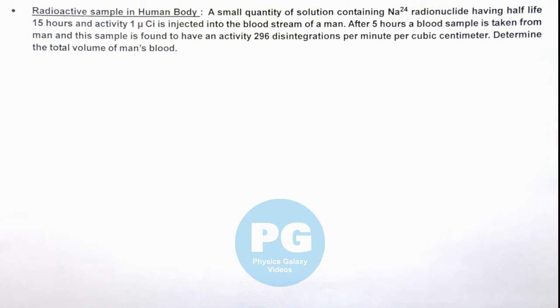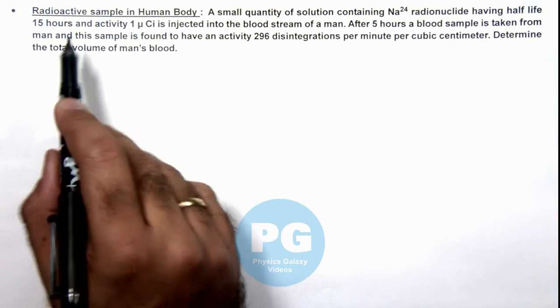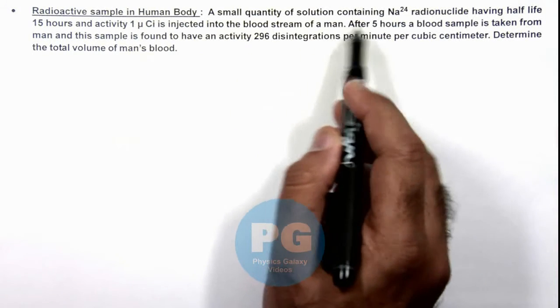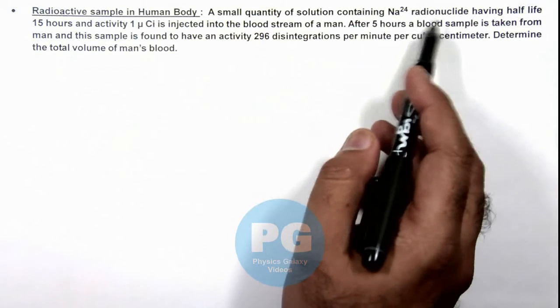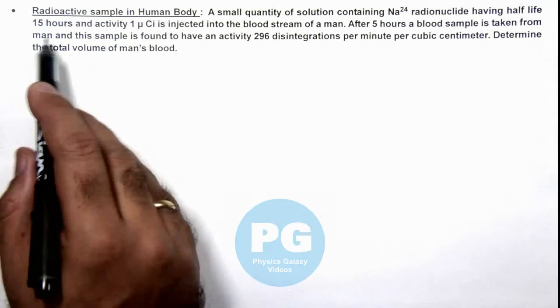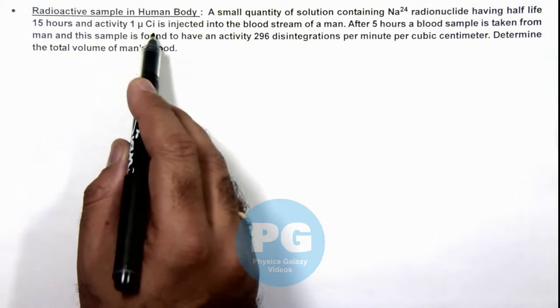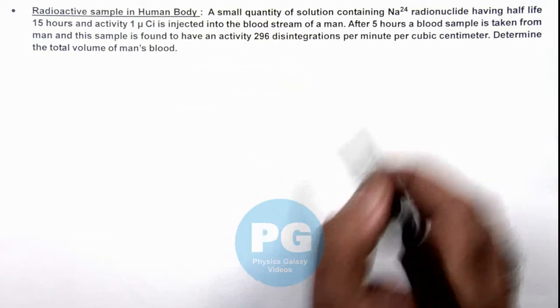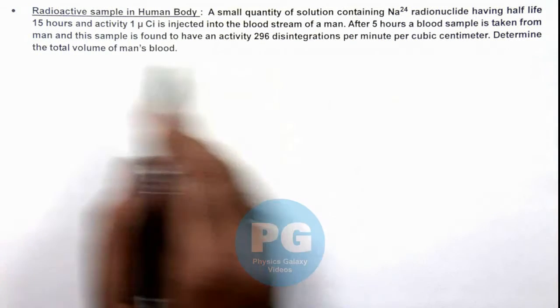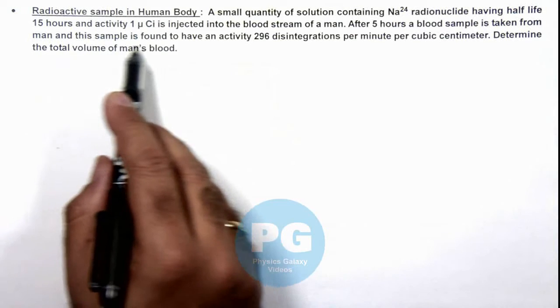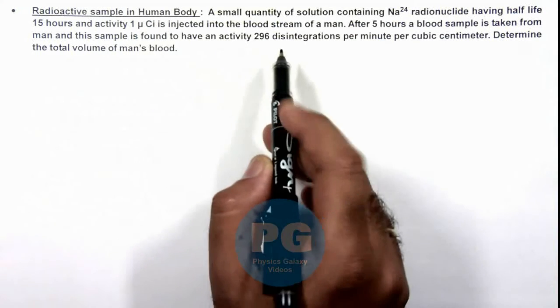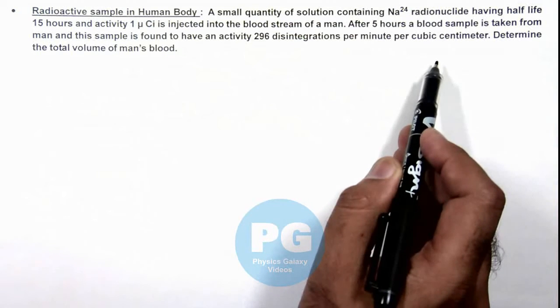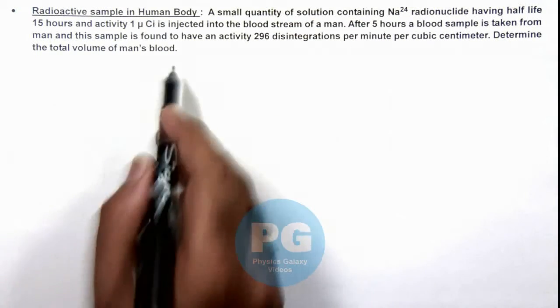In this illustration we'll analyze the radioactive sample in a human body. Here we are given that a small quantity of solution containing sodium 24 radionuclide having half-life of 15 hours and activity 1 microcurie is injected into the blood stream of a man. After 5 hours a blood sample is taken from the man, and this sample is found to have an activity of 296 disintegrations per minute per cubic centimeter. Determine the total volume of the man's blood.